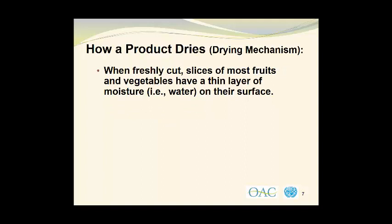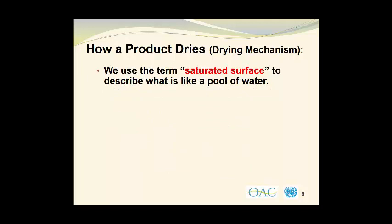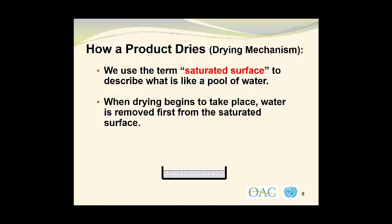When freshly cut, slices of most fruits and vegetables have a thin layer of moisture — that is, water — on their surface. Looking at this slice of mango, you may see a shiny watery layer on the surface. We use the term saturated surface to describe what is like a pool of water. When drying begins to take place, water is removed first from the saturated surface.